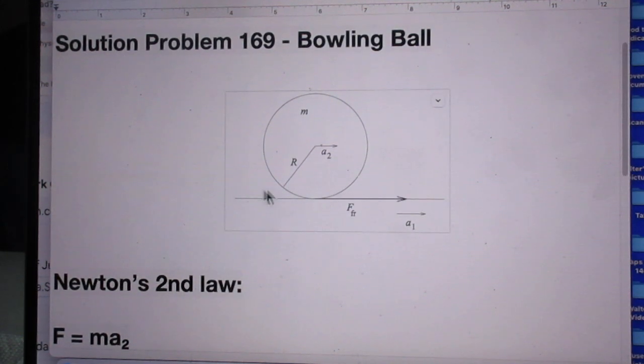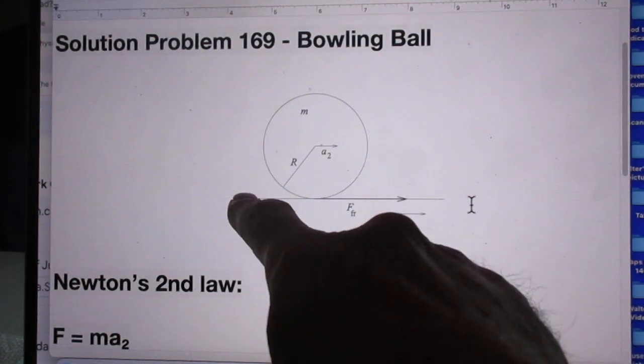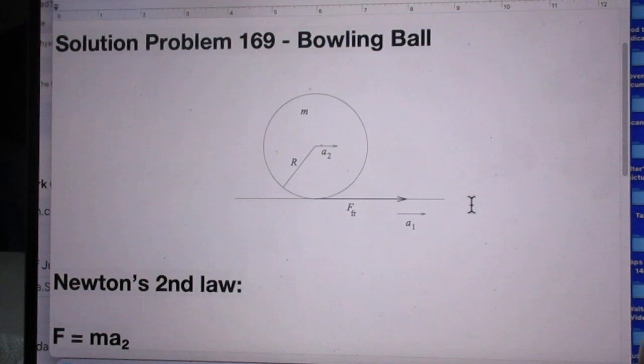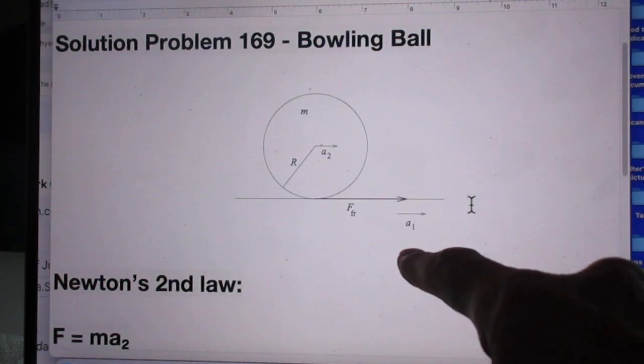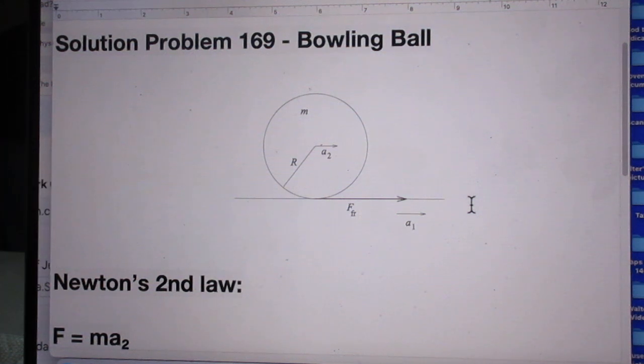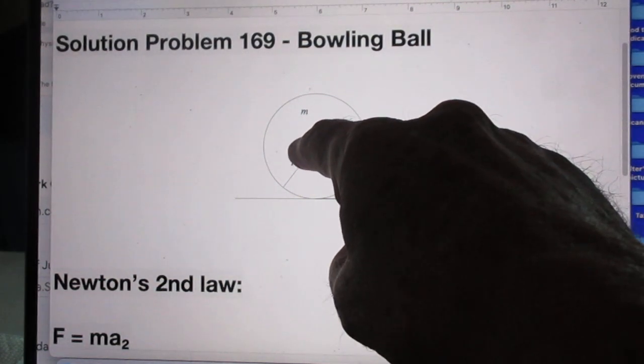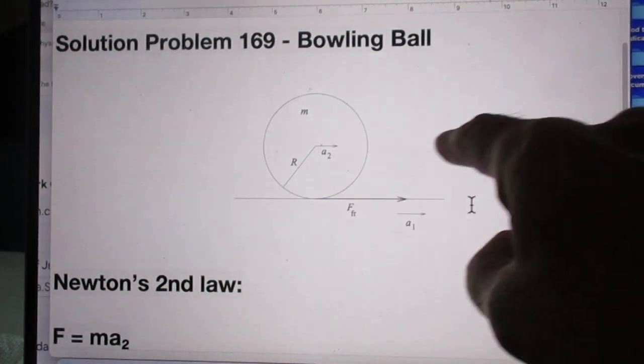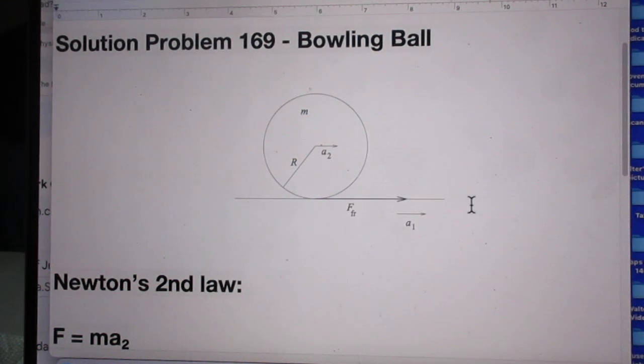Here is a bowling ball which stands on a moving belt. The belt moves in this direction with acceleration A1 relative to me. I'm standing here. And relative to me, the ball will start to move to the right, the center of the ball, to the right with acceleration A2.